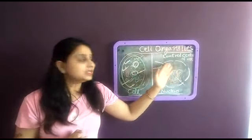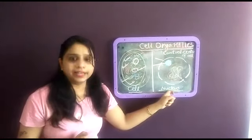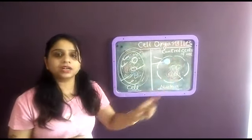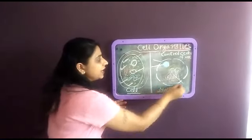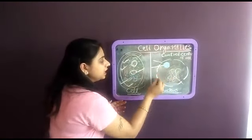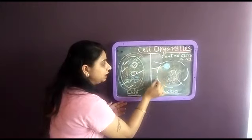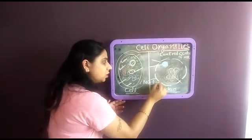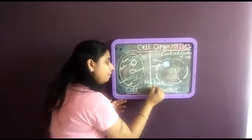The first cell organelle is nucleus. Now what does the nucleus structure comprise of? Nucleus has a membrane. This membrane is called nuclear membrane.